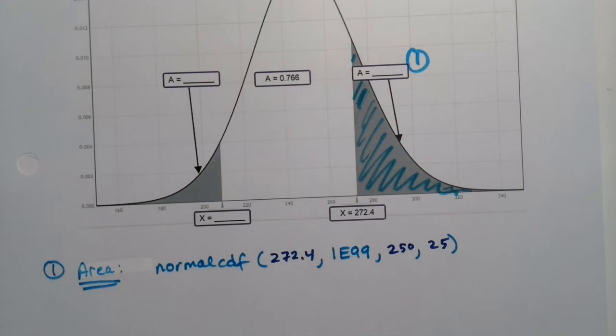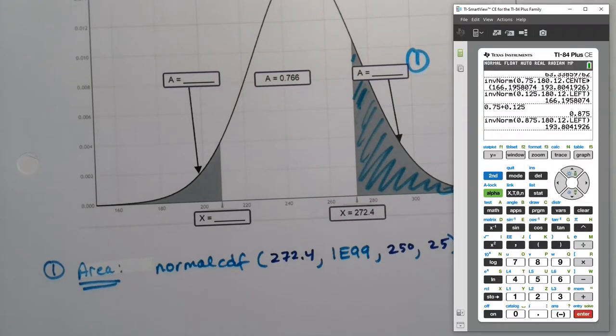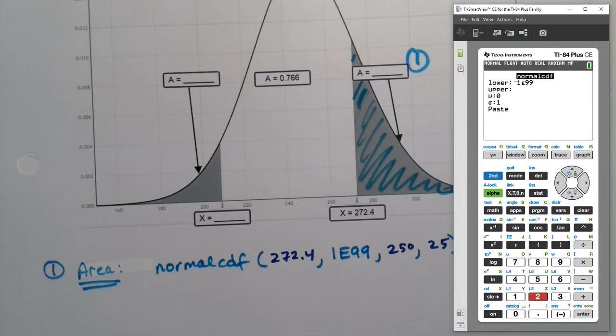And then the mean was 250, and the standard deviation was 25. Like that. Okay, so let me grab the calculator. Second distribution, normal CDF, 272.4.